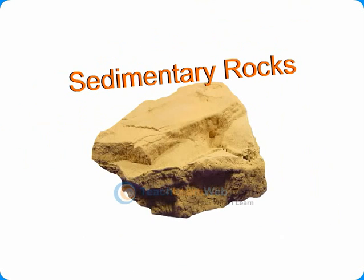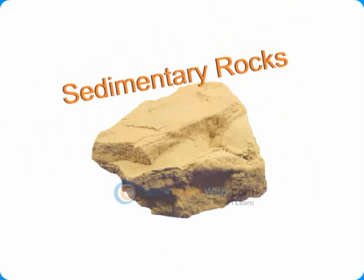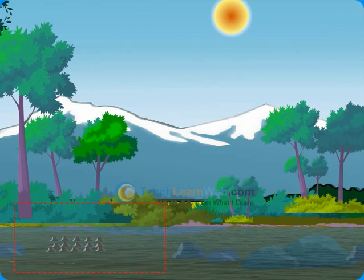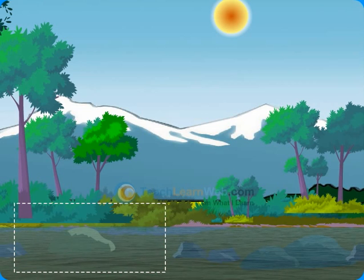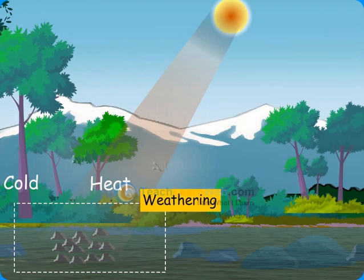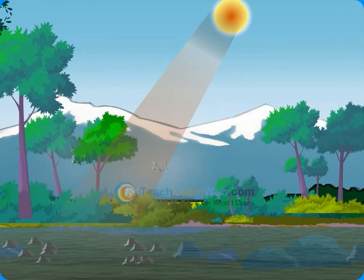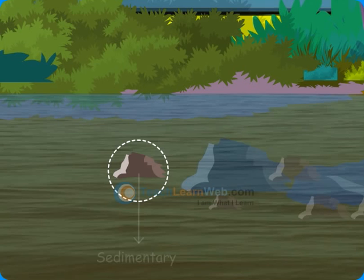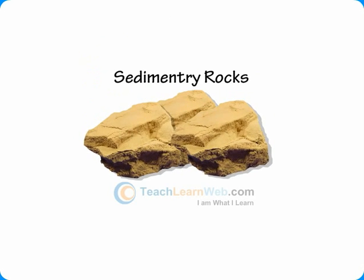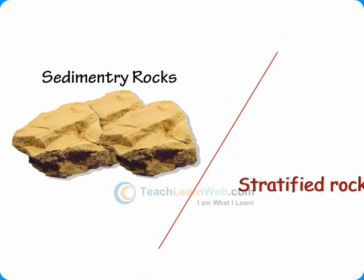Sedimentary rocks are formed by the deposition of particles by flowing water. The existing rocks are broken down by the action of heat and cold into fine particles by the process of weathering. These particles are carried by wind and water and deposited as sediments. This process is called sedimentation. Sedimentary rocks are also called stratified rocks.